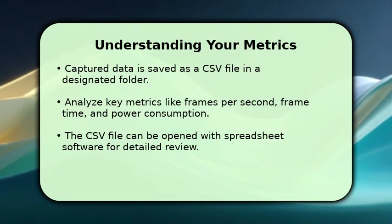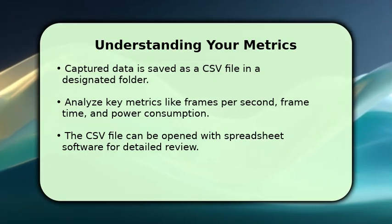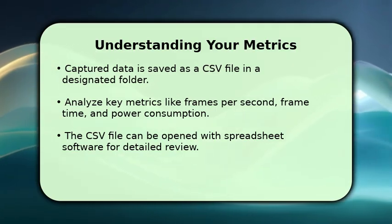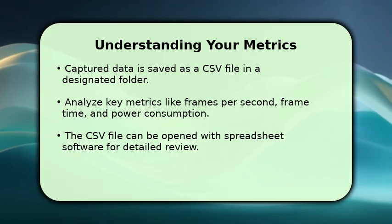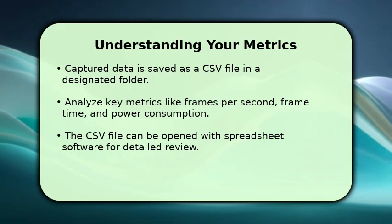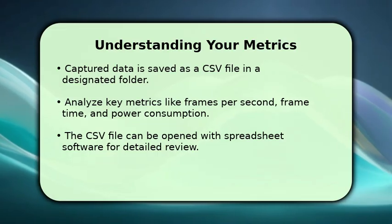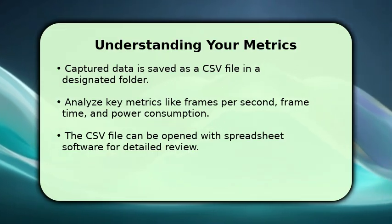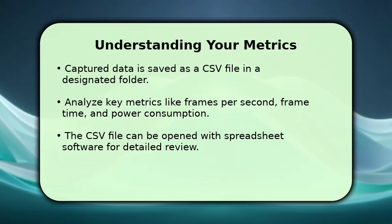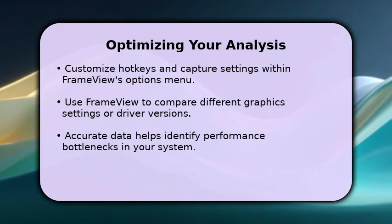After stopping a capture, FrameView automatically saves your performance data as a comma-separated values file. You can find these files in a dedicated folder, typically within your documents. These files contain crucial metrics such as average frames per second, 1% low frame rates, and even power consumption. Opening the CSV file with any spreadsheet program allows for in-depth analysis, helping you understand your system's performance across various scenarios.